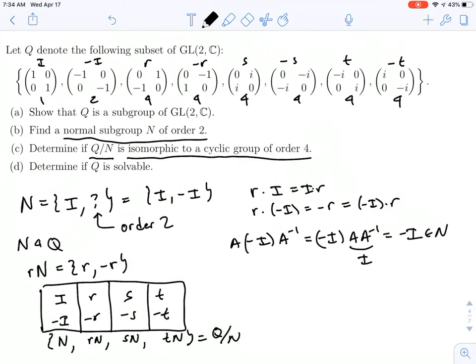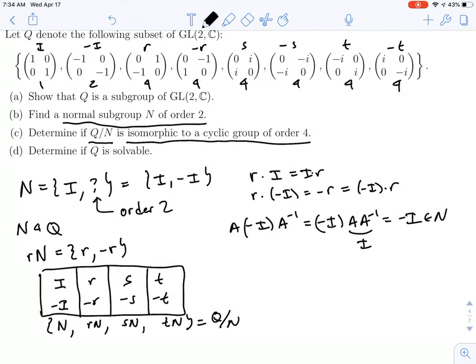Now, the question is whether or not this is isomorphic to a cyclic group of order 4. Well, if it is, then there must be an element of order 4. So we need to work out what the orders of these elements are. N is just the identity element in the quotient, so that has order 1. What about RN? Well, if you square RN, this would be the same thing as R squared N. And we know that R squared is equal to negative of the identity. But negative of the identity is an element of N. So this is just equal to N. So the order of RN is 2, not 4.